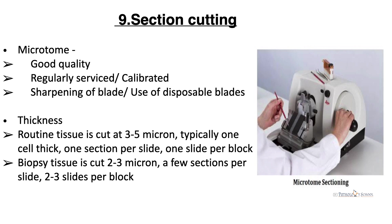For section cutting, a good quality microtome that is regularly serviced and calibrated with a sharp blade — preferably disposable — should be used. For routine tissue, we cut at 3 to 5 microns, typically one self-thick section per slide and one slide per block. For biopsy tissue, we cut at 2 to 3 microns with two to three sections per slide and two to three slides per block.